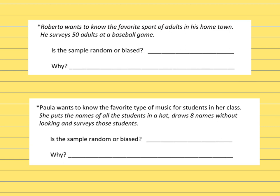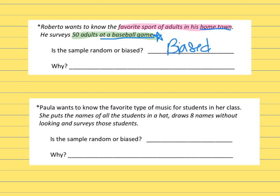Now back to the ones in your journal. This one says: Roberto wants to know the favorite sport of adults in his hometown. He surveys 50 adults at a baseball game. Is this sample random or biased? He's going to survey 50 adults — that's the smaller grouping — at a baseball game. It's okay that he asked only adults since his question is looking at adults. However, the place he went — a baseball game — is not making it fair to represent his whole town. So this would be biased, because he was only at a baseball game when he asked the question.